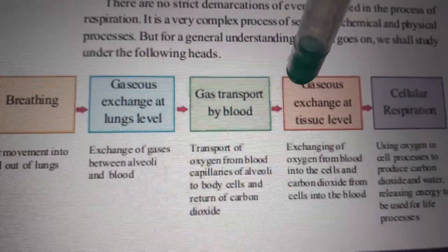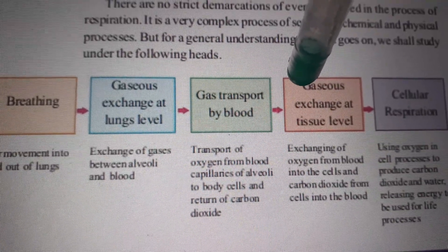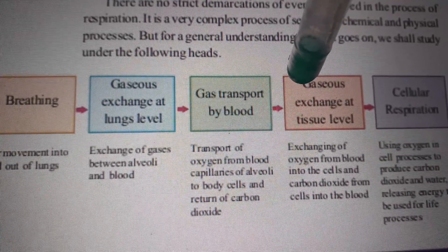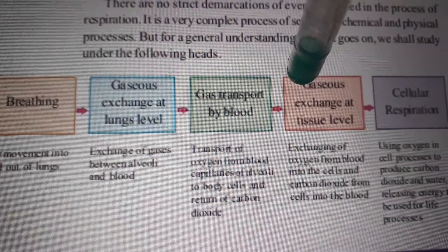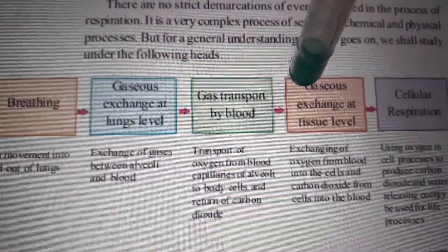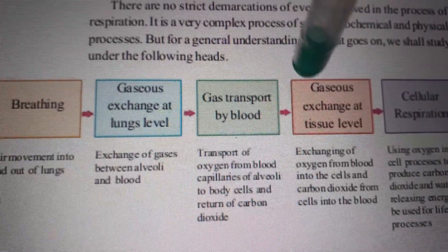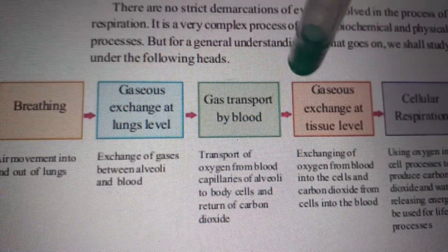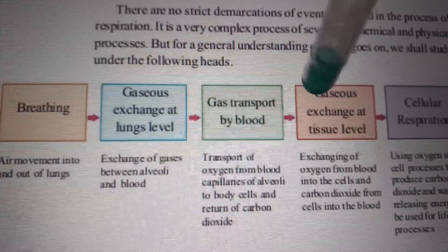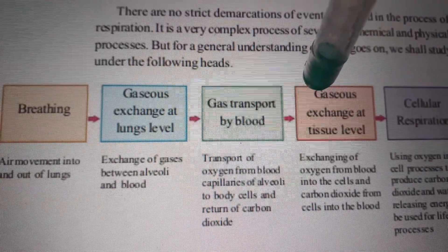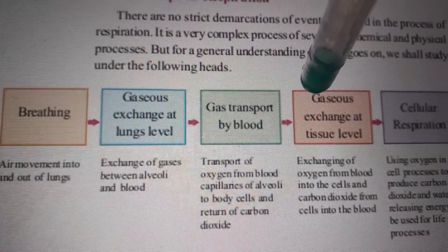Exchange of oxygen from the blood to tissues, and tissues giving carbon dioxide to the blood, takes place here. This is gaseous exchange between the blood and tissues — that is the third step of respiration.